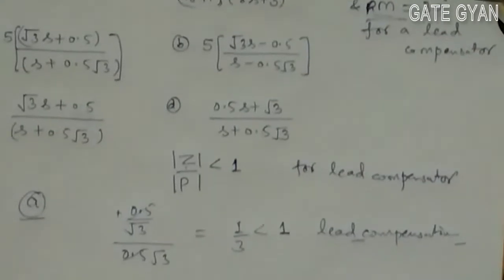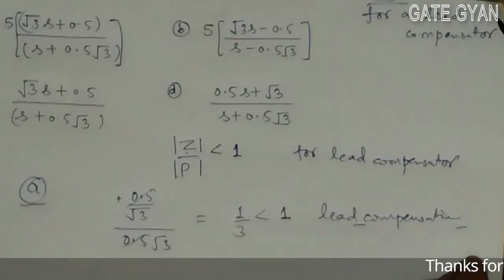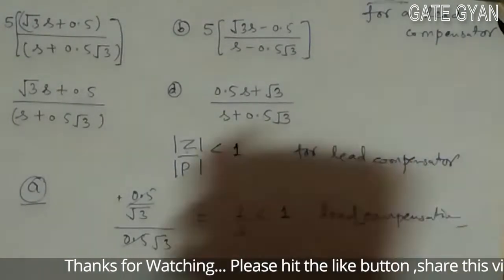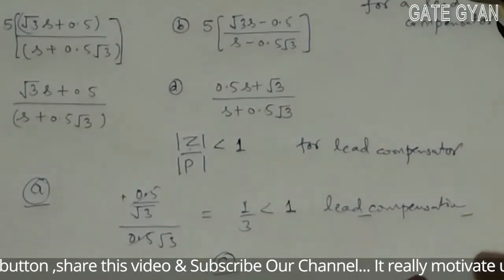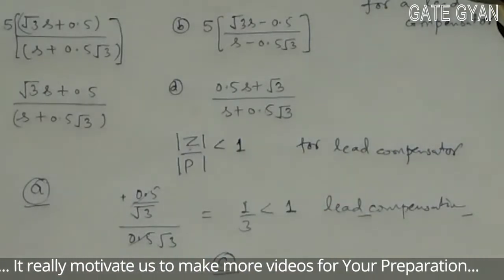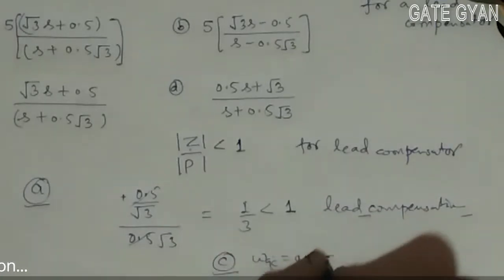At gain crossover frequency ωgc, the gain of the system becomes 1. We will check for options A and C to see which one has gain = 1 at ωgc = 0.5. For option C, if we put ωgc = 0.5,